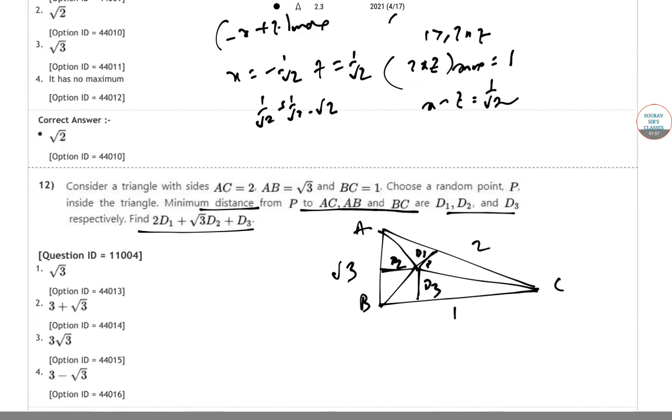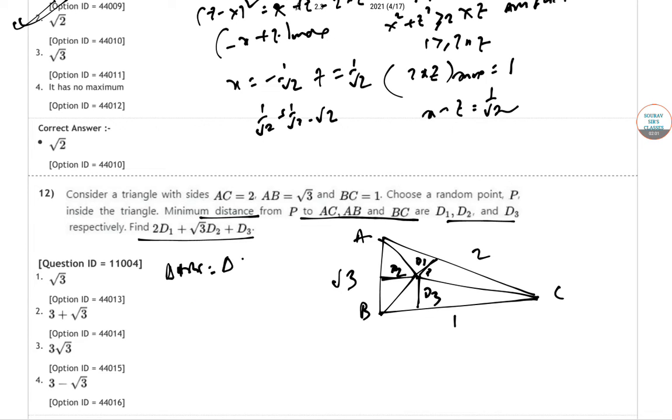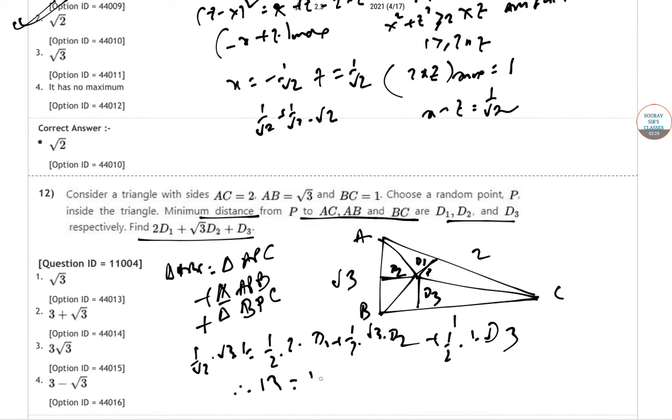So area of triangle ABC is equal to area of triangle APC plus area of triangle APB plus area of triangle BPC. So obviously half into root 3 into 1 equal to half into 2 into D1 plus half into root 3 into D2 plus half into 1 into D3. So root 3 equal to 2D1 plus root 3 D2 plus D3. So finally answer is root 3. Let's go for the next one.